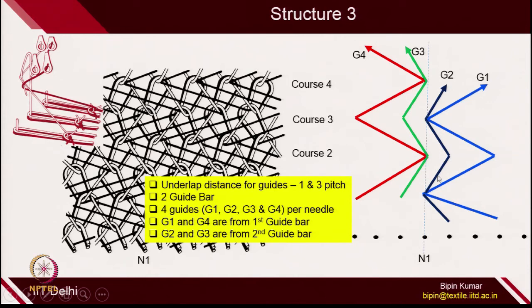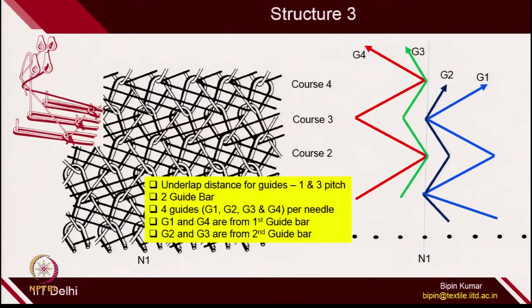If you just follow the path: G1 and G4 — the blue one and the red one — have almost similar movements. These similar movements can be attached to the same guide bar. So G1 and G4 must be attached with the first guide bar. If you follow the movement of G2 and G3, their movements are also the same, so they must be attached with the second guide bar. This is how you can identify a double bar fabric, where 2 loops will be formed and 2 guides will be interacting with each needle.